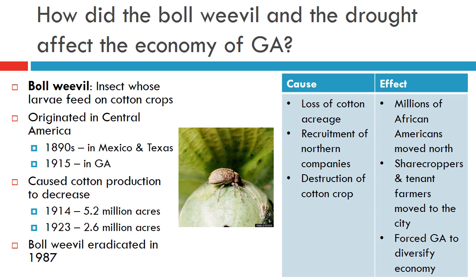Additionally, the destruction of the cotton crop forced Georgians to diversify their economy. Cotton ceased to be Georgia's primary agricultural product. In fact, by 1983, Georgia only produced 115,000 acres of cotton. With the population movement into the cities, Georgia's manufacturing continued to develop, though slowed greatly by the Great Depression.